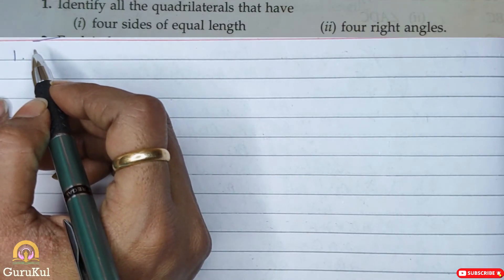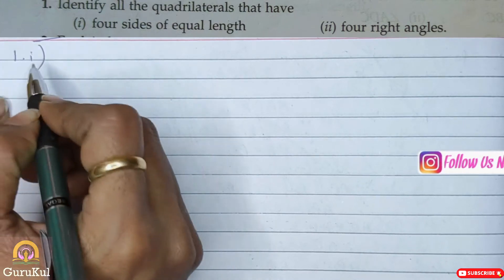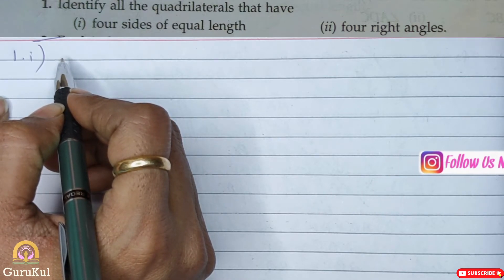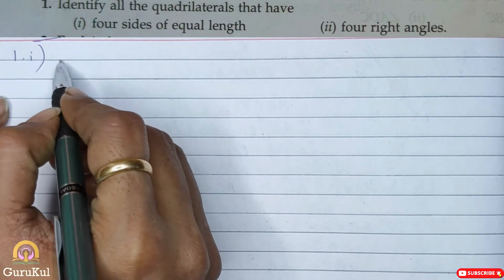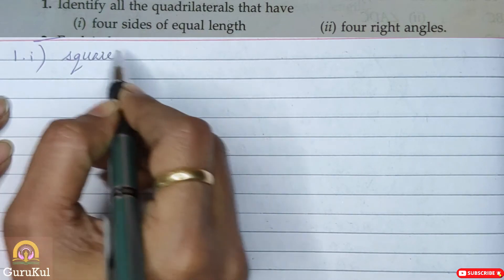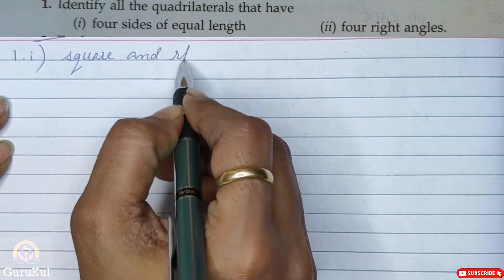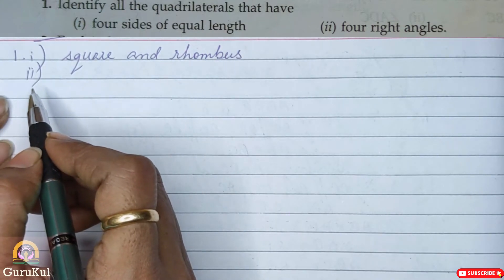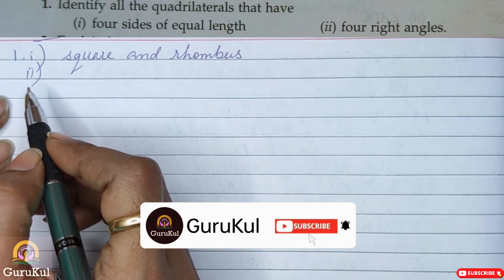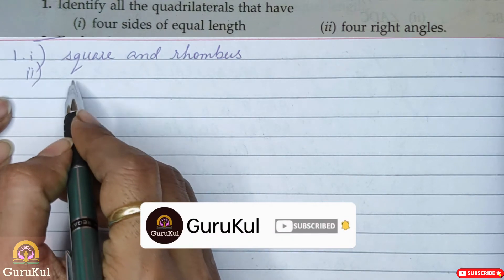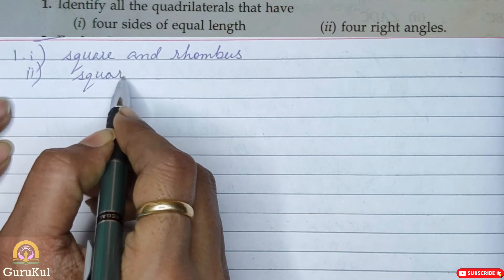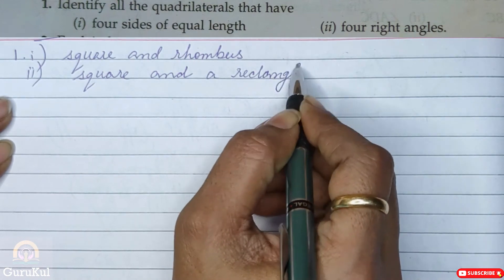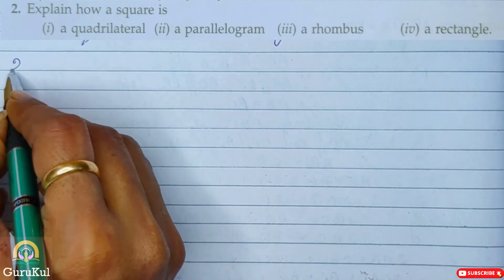So the first question, identify all the quadrilaterals that have first part four sides of equal length. If you all have followed the properties, then I am sure you all know the answer. It is square and rhombus. Secondly, four right angles. So a quadrilateral having four right angles is, again it is a square and a rectangle.